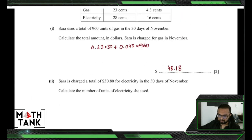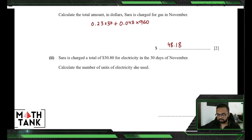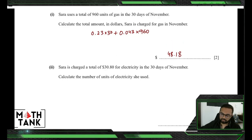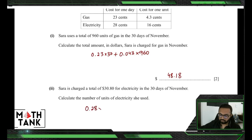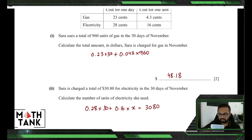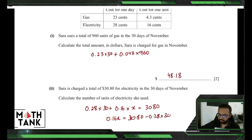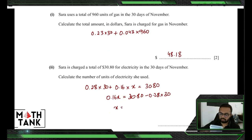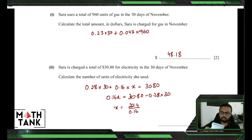Sara is charged a total of $30.80 for electricity in the 30 days of November. Calculate the number of units used. It's basically the same equation with a different unknown: 0.28 into 30 plus 0.16 into x equals 30.80, where x is the number of units. Moving terms gives 0.16x = 30.80 minus 0.28 into 30, so x = 22.4 divided by 0.16, which gives 140.